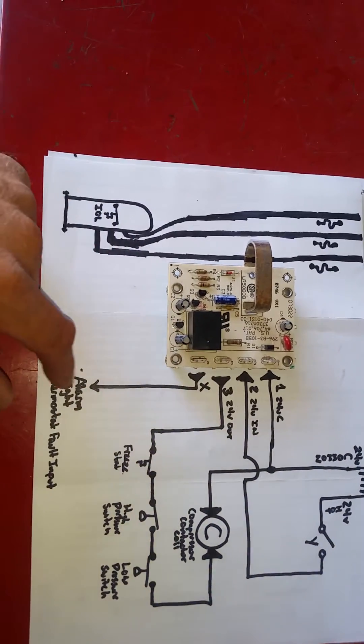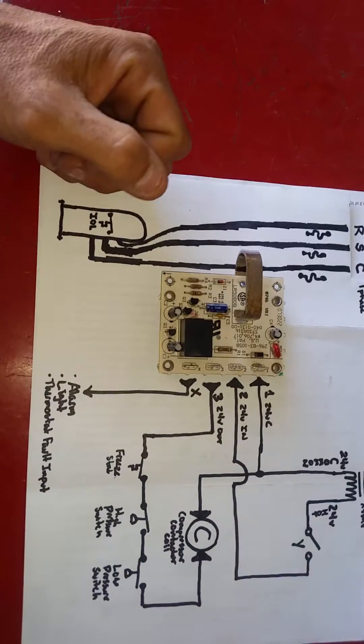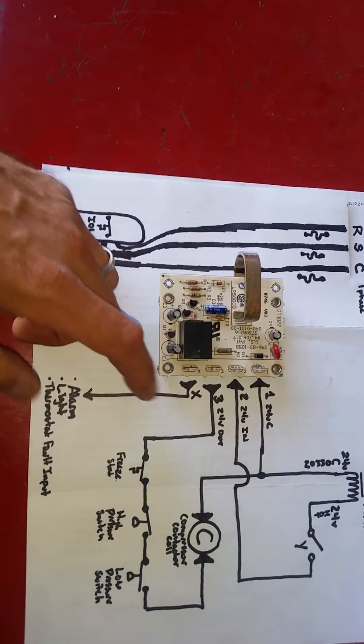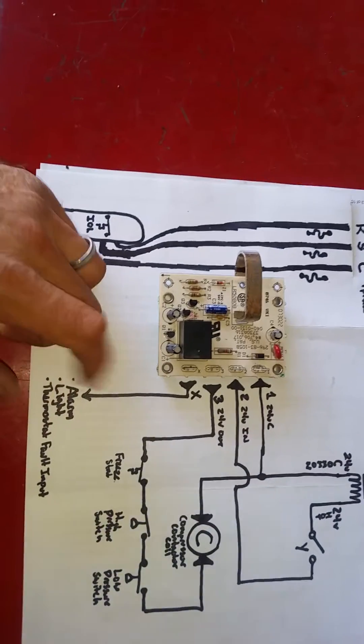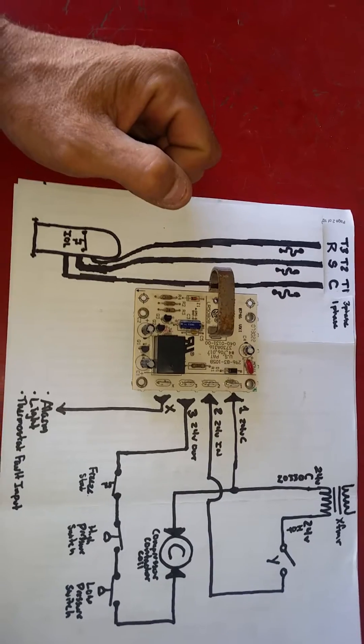We can send that 24 volts to that fault input to designate that there's an error or a fault with our system at the thermostat itself. Other times you can have this 24 volts go to an alarm, a light of some sort in order to signify that there's an issue with that rooftop unit.